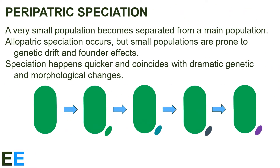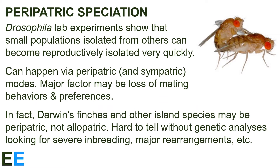Our next speciation mechanism is peripatric speciation. In this scenario, a very small population becomes separated from a main population. Allopatric speciation occurs, but small populations are prone to genetic drift and founder effects. These random effects mean that speciation happens quicker and coincides with dramatic genetic and morphological changes. You can think of this as a subset of allopatric speciation, but quicker and with random factors playing a larger role due to the small population size. Because peripatric speciation is basically a special case of allopatric speciation, it's hard to distinguish between them in nature.